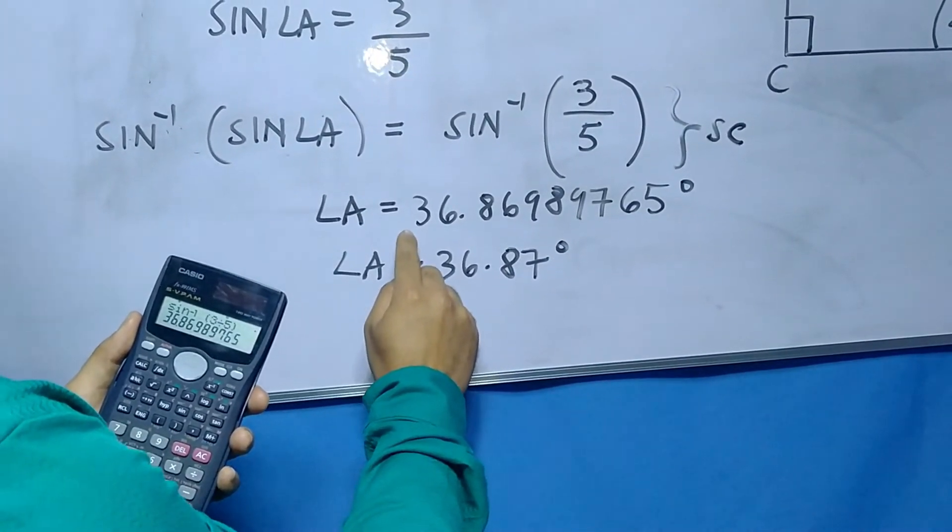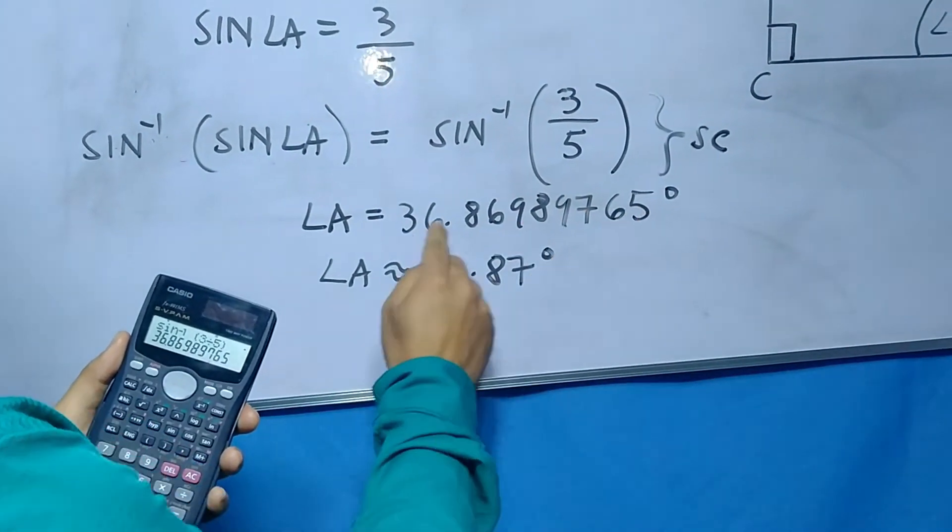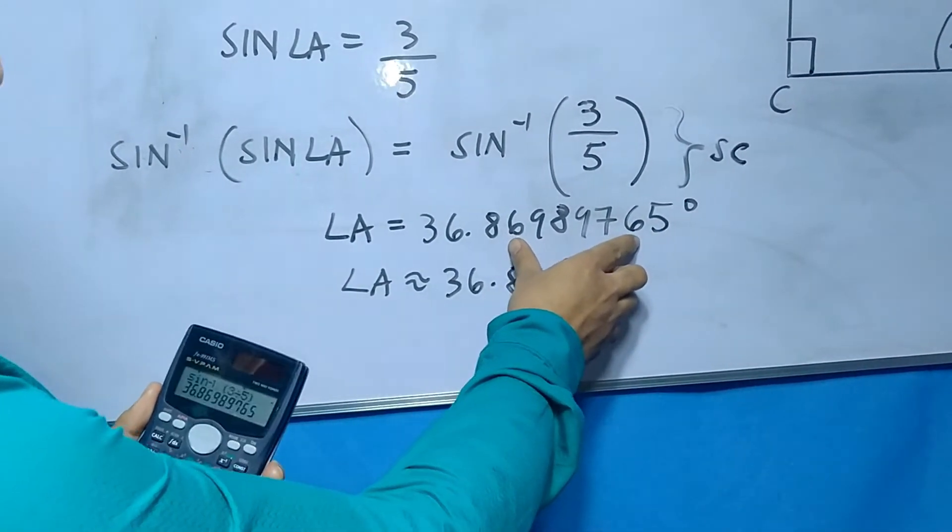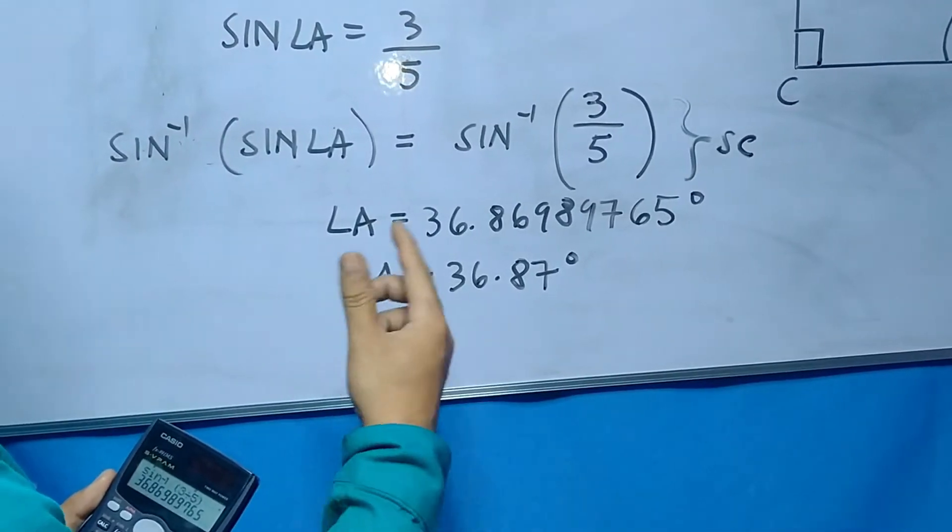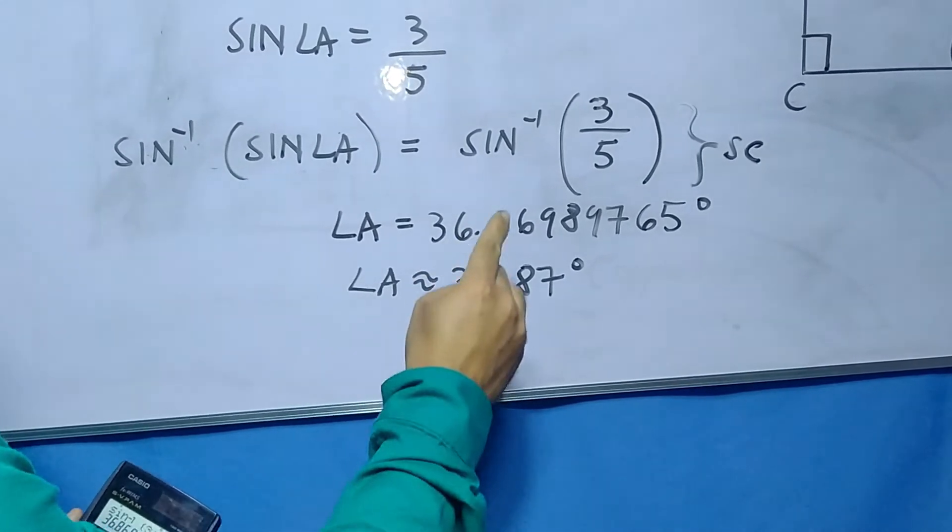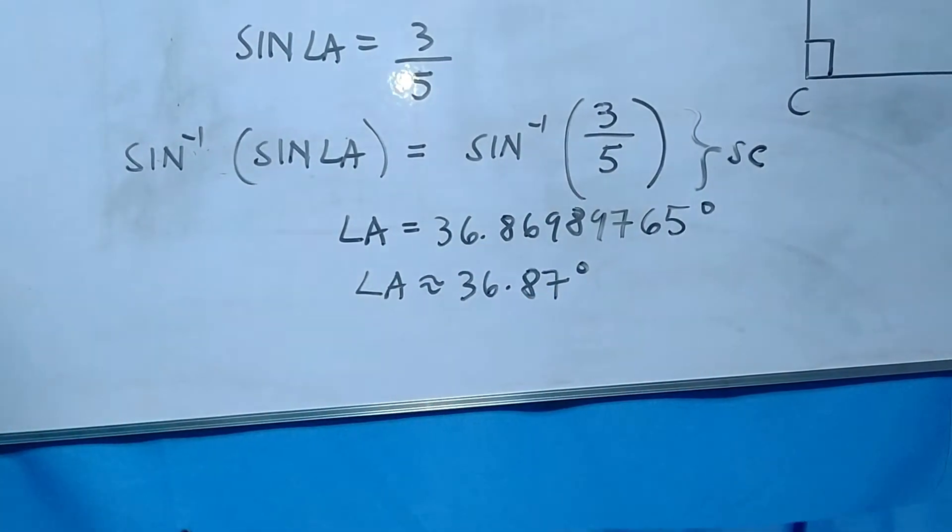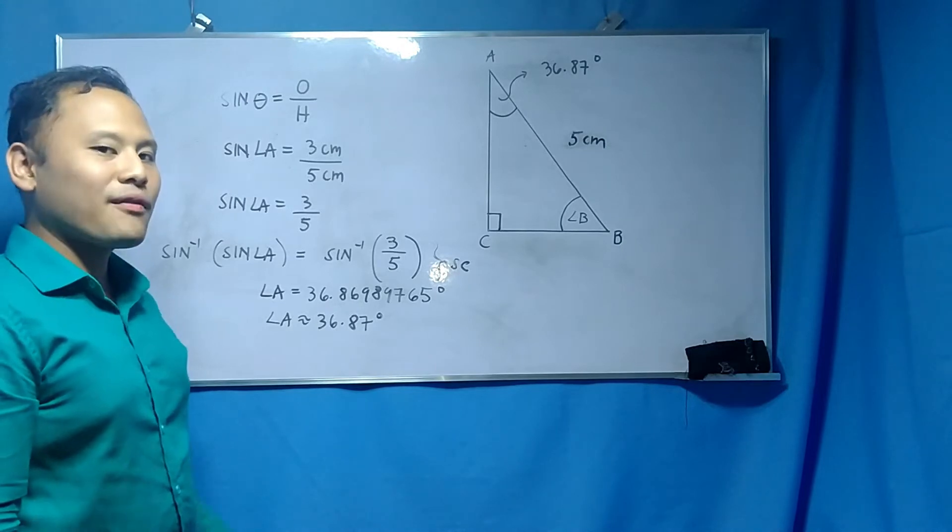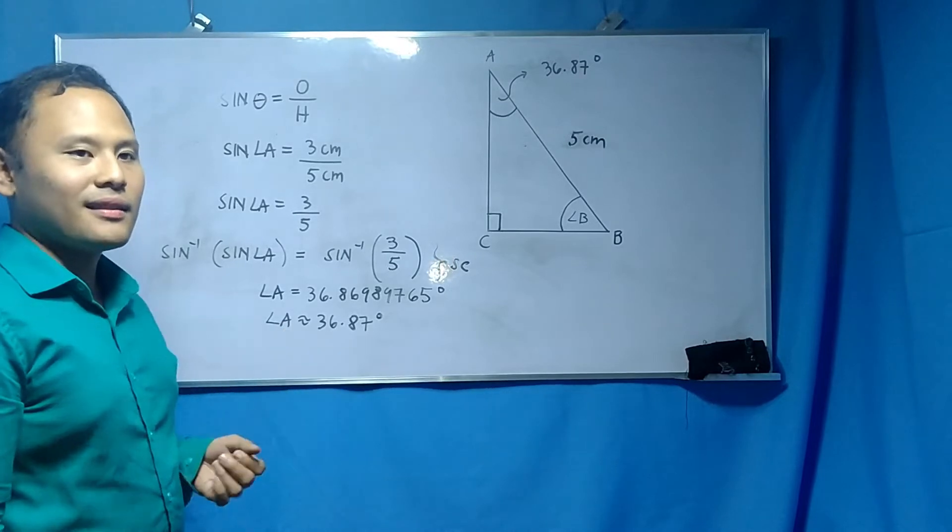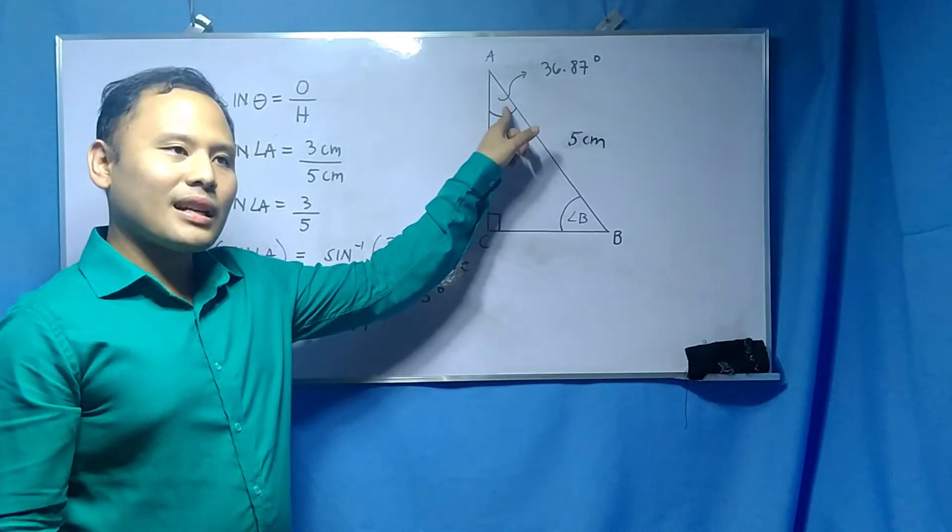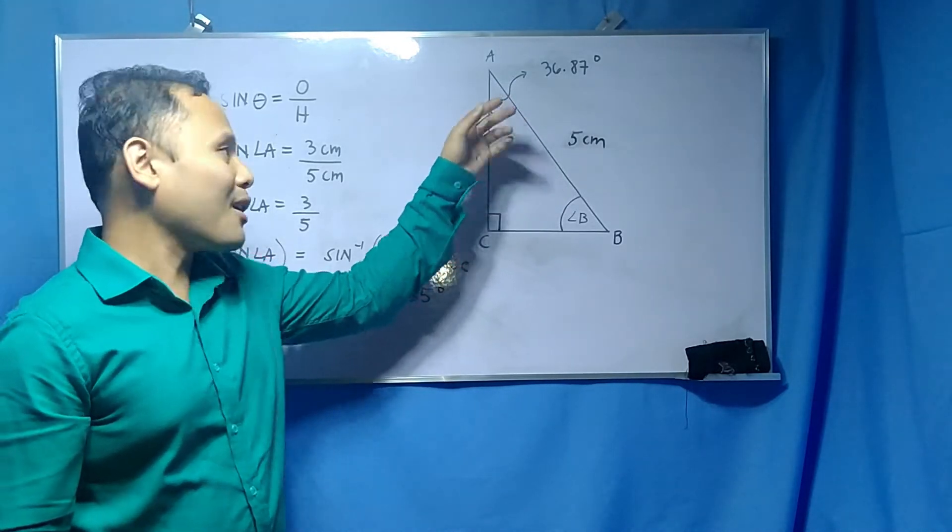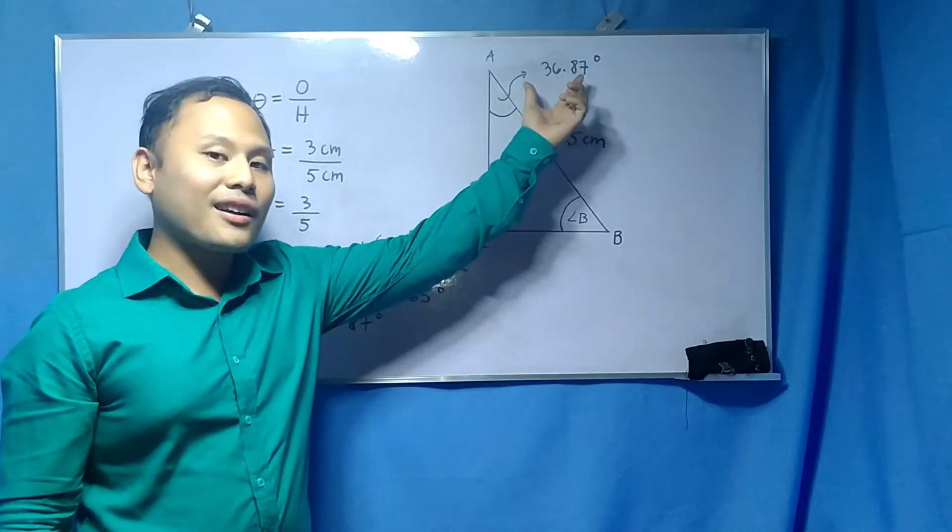So, if you want, I like this measure because this is very accurate. The longer the decimal place is, the more accurate the measure is. But if you are required to answer or to give the approximate value, you can have the angle A is approximately equal to 36.87 degrees. Okay, class, we have obtained the value or the measure of the acute angle A. And this is it. In my previous discussion, it was missing. But now we have the measure of acute angle A.